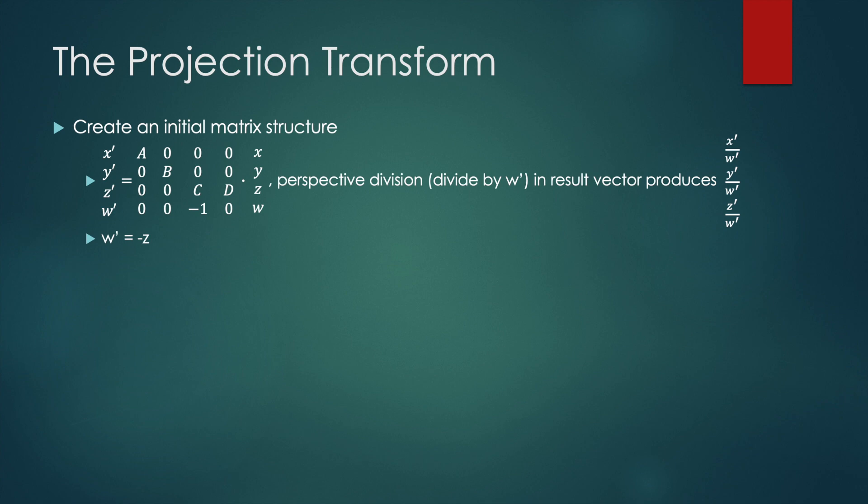There's an implicit division of the 4D resulting vector to produce a three-dimensional vector with x, y, and z divided by the w prime, the fourth dimension.